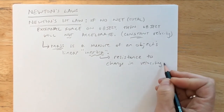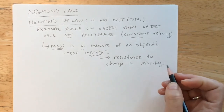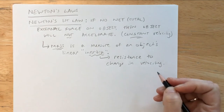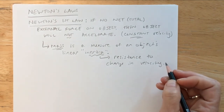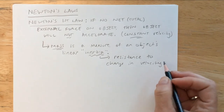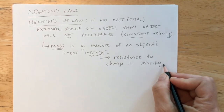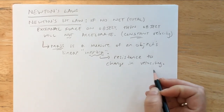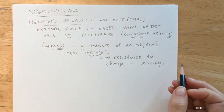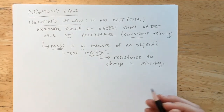For example, if you're driving in a car at a constant velocity and then you hit the brakes, your body wants to keep moving with that same velocity even though the car is stopping. You feel that inertia — your body wants to continue with that same velocity. Mass is a measure of an object's inertia.